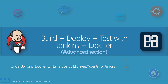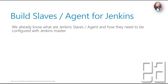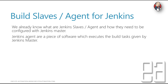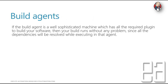We are going to understand Docker containers as build slaves or agents for Jenkins. We have already discussed build slaves — otherwise called agents — and how they need to be configured with Jenkins master, communicating via SSH or JNLP. A Jenkins agent is a piece of software which executes the build tasks given by the Jenkins master. If the build agent is a sophisticated machine with all required plugins, your build runs without any problem since all dependencies will be resolved.